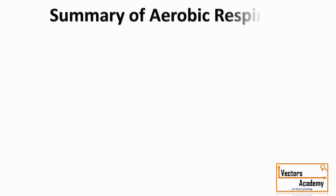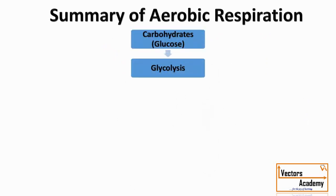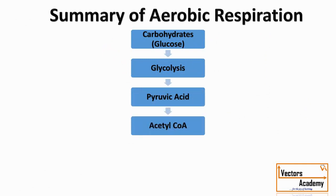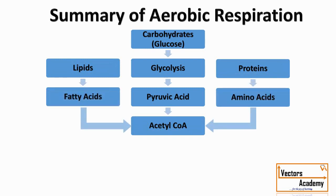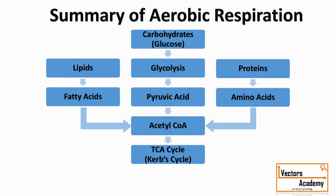To summarize all three stages: glucose undergoes oxidation in glycolysis, producing pyruvic acid, then acetyl coenzyme A. With the help of fatty acids and amino acids, it undergoes the TCA cycle, also known as the Krebs cycle, and then by the electron transfer chain reaction, the body produces the required energy. The byproducts are carbon dioxide and water molecules.